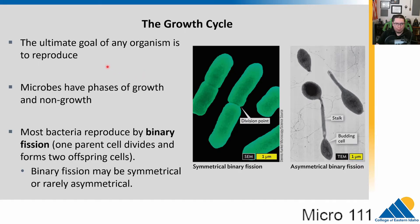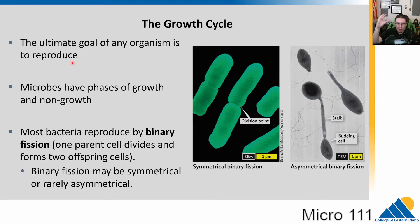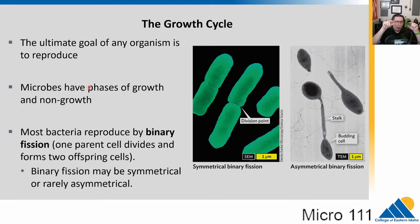The ultimate goal of any biological organism is to reproduce, because that keeps biology going. Evolutionarily speaking, your ultimate goal may be different, but from a biological evolutionary standpoint, that is the ultimate goal. Microbes are masters at reproduction. They have phases where they grow and phases where they don't. For bacteria, growth is not what we typically think of — growth is division in almost all cases.